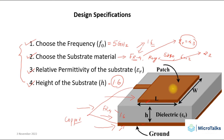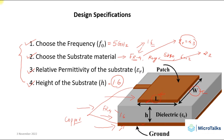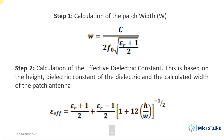We need to find out the patch length and patch width, since we use a rectangular patch. These two values — width W and length L of the patch — need to be found. Accordingly, we will choose the length and width of the substrate and ground to accommodate the patch. The remaining section of the video will discuss the different equations used to find out this width and length of the patch.